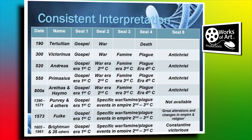Coming down to Purdy and four others from 1390 to 1571, there's a slight change of emphasis. Because they're a long way away from those events happening in the second, third, and fourth centuries, they lump it together - yes, it's war, famine, and plague, but it's in the second and third centuries. They're now looking into almost ancient history. So the interpretation is consistent, but they've got a slightly different slant because it's such a long time ago.